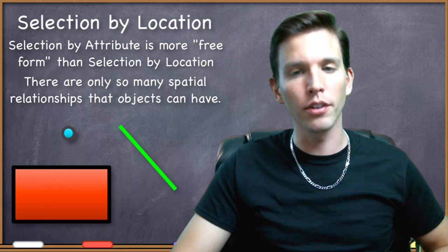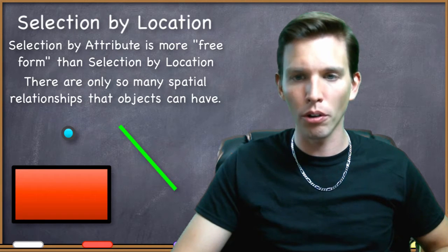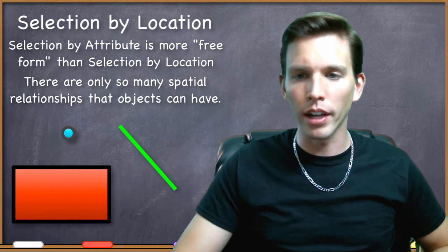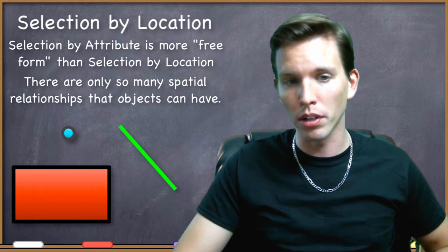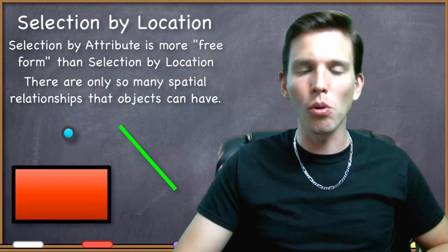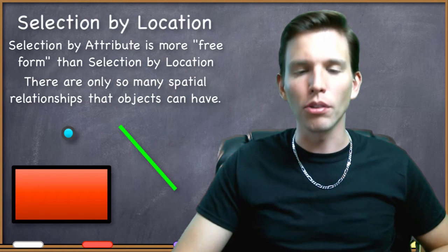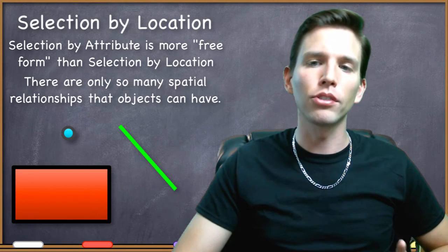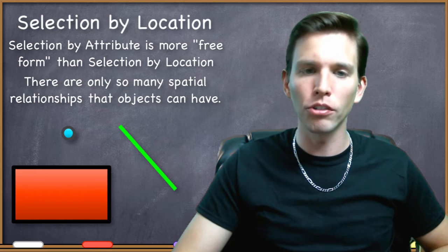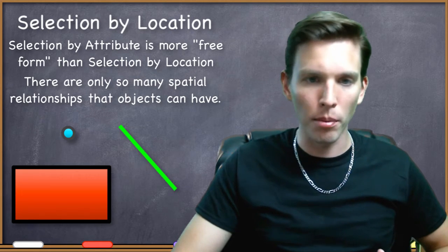We could expand from there into three dimensions and start to consider volumes. That would give us more relationships that these features can have with one another, but still, on the whole, it would be a rather short list, and it would be fairly easy to complete. So selection by location is all about selecting features that have one of these spatial relationships with some other feature.